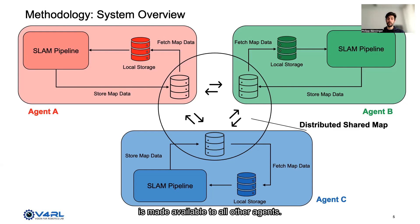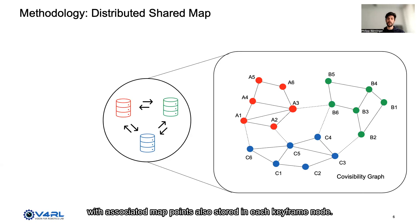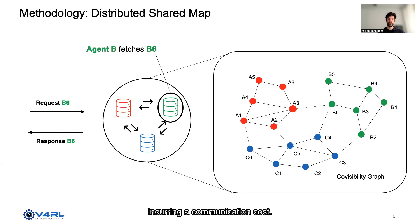In the distributed shared map, each agent's map data is stored in the form of a covisibility graph with associated map points also stored in each keyframe node. Querying the shared map involves sending a keyframe key to the appropriate agent which fetches the requested data and sends it back to the querying agent, incurring a communication cost.